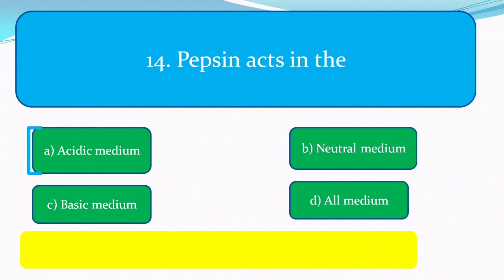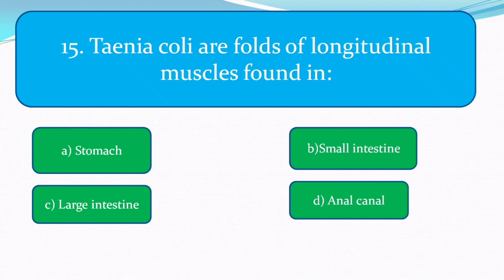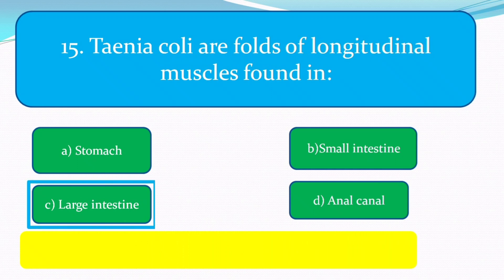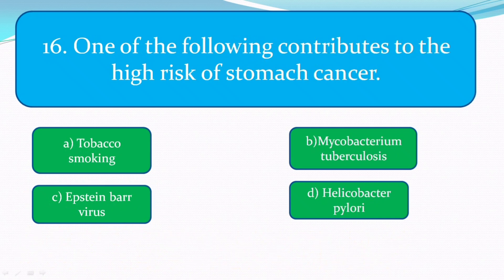Pepsin acts in acidic medium. The correct answer is acidic medium. Tenia coli are folds of longitudinal muscle found in the large intestine. The next question: one of the following contributes to the high risk of stomach cancer — the answer is Helicobacter pylori.